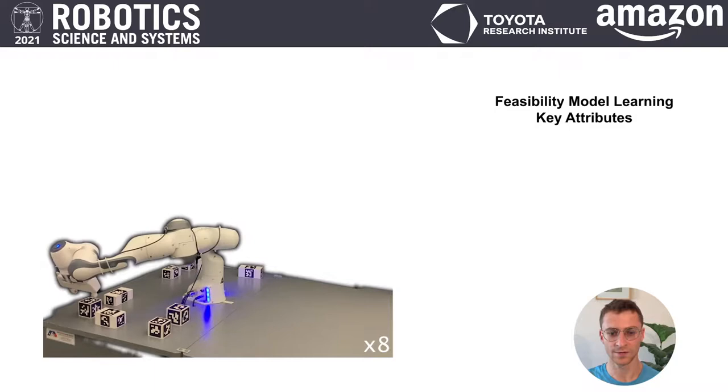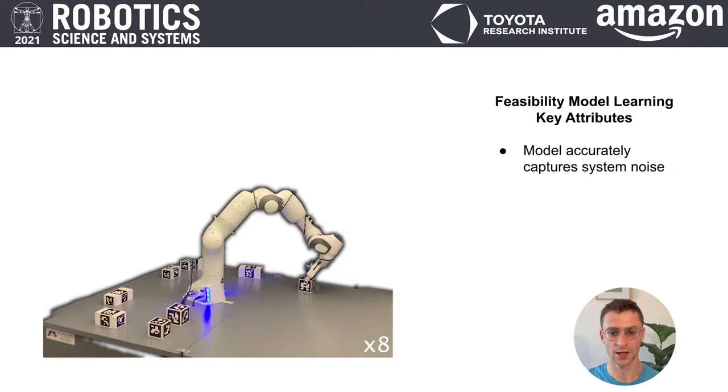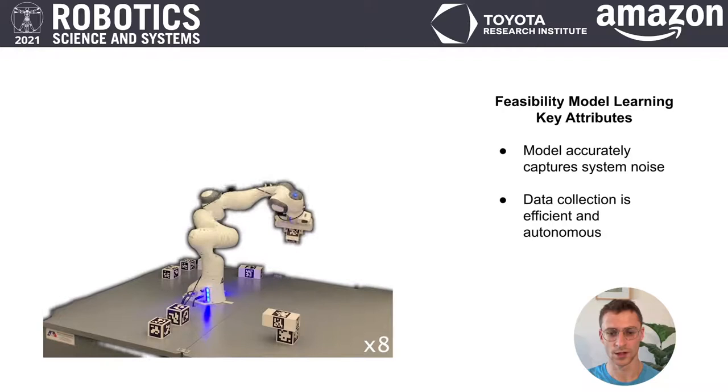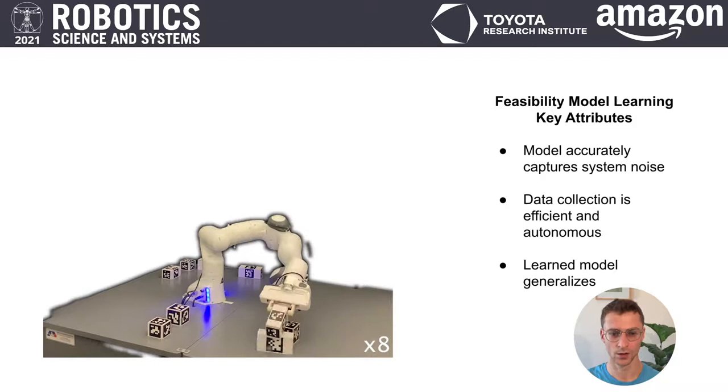To label a plan's feasibility, the robot must execute the plan in the real world. The process is expensive, sometimes taking up to 10 minutes to construct a single tower. Therefore, our approach must be data efficient to limit the amount of real-world experimentation needed, and autonomous to limit the amount of human intervention. In addition, a useful model is one which generalizes to multiple tasks.